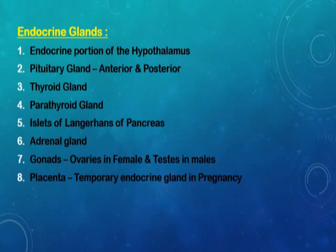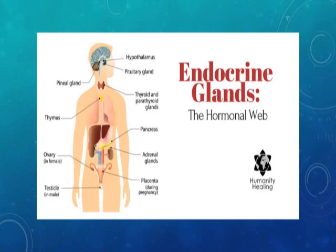Starting from the top, we have the endocrine portion of the hypothalamus, pituitary gland anterior and posterior, thyroid gland, parathyroid gland, islets of Langerhans of the pancreas, adrenal gland, and gonads. In females the gonads are the ovaries, in males they are the testes, and we have the placenta which is a temporary endocrine gland present only during pregnancy.